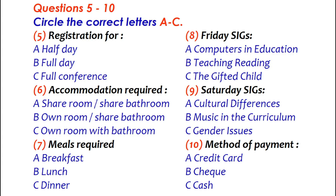Now, a couple of other things. There are a number of special interest groups organised. They're known as SIGs, and you're asked to nominate your preference. They'll take place on the Friday afternoon and Saturday morning, but they're filling up quickly, which is why you need to nominate now. Right. What are the SIGs?